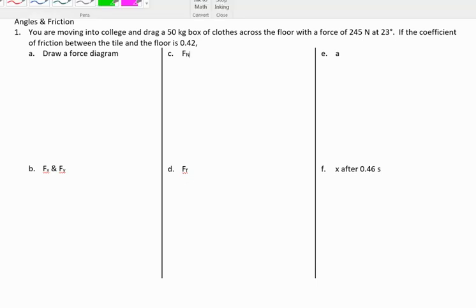When looking at dynamics problems, we have two different situations where we can have an angle: one where you're pulling something at an angle, and one where you are coming down a hill or what we call an inclined plane. In this example, I'm going to walk you through a problem where you are pulling something at an angle.